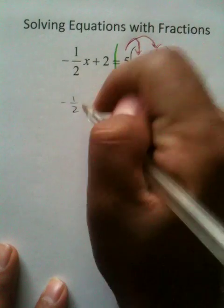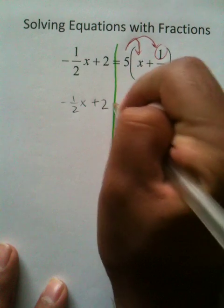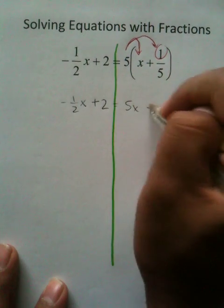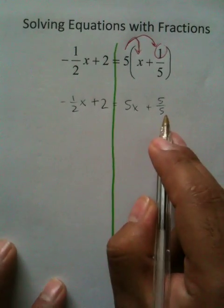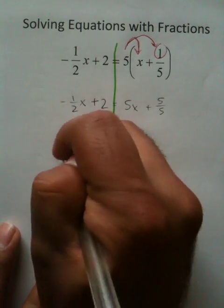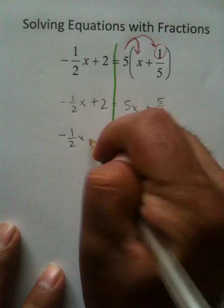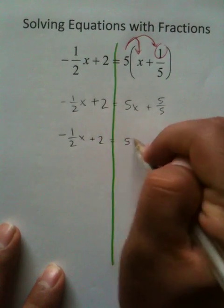After you do that, your equation's going to look like this: negative 1 half x plus 2 equals 5x plus 5 over 5. Now, the nice thing about this part right here is that 5 over 5 turns into 1. There's nothing wrong with you converting fractions into whole numbers if you want.